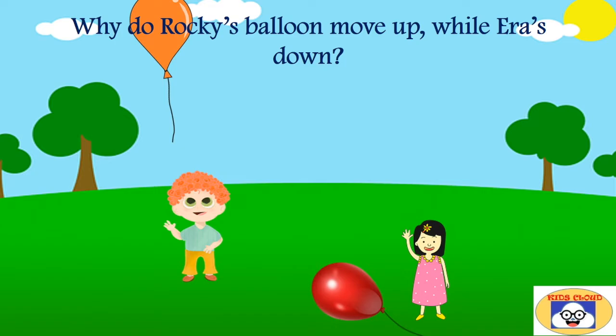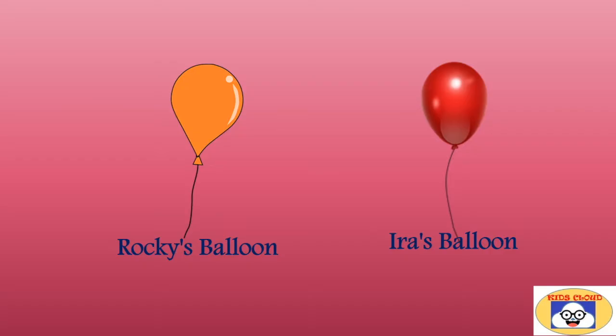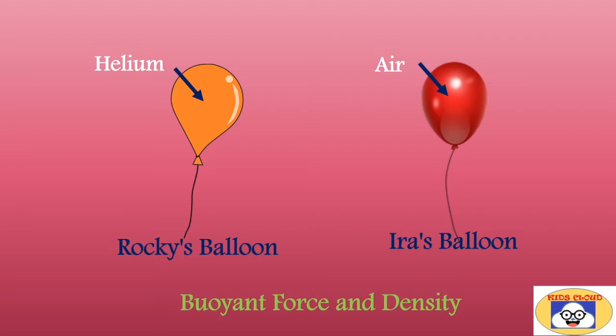Let's find out the reason behind it. There is a difference in the gas inside the balloon. Rocky's balloon contains helium, while Ira's balloon has air inside it. Does it matter what is inside the balloon to make it float? Yes, it matters. To understand it, we have to know about buoyant force and the density of that particular gas.